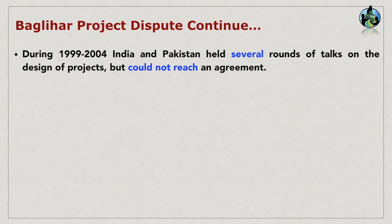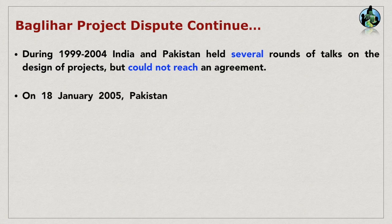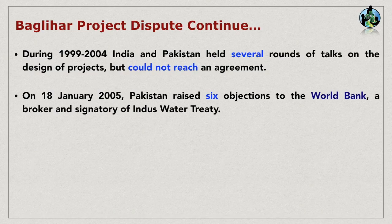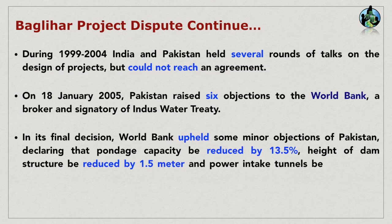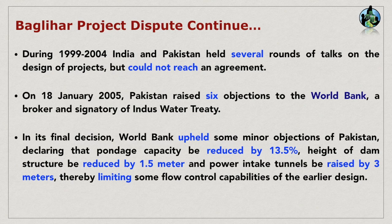During 1999 to 2004, India and Pakistan held several rounds of talks on the design of the project but could not reach an agreement. On 18th January 2005, Pakistan raised six objections to the World Bank, a broker and signatory of the Indus Water Treaty. In its final decision, the World Bank upheld some minor objections of Pakistan, declaring that pondage capacity be reduced by 13.5%, height of dam structure be reduced by 1.5 m, and power intake tunnels be raised by 3 m, thereby limiting some flow control capabilities of the earlier design.